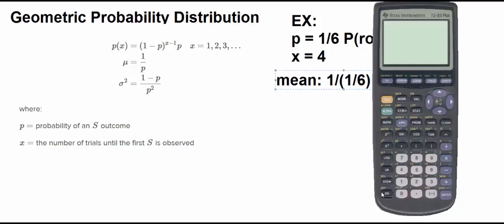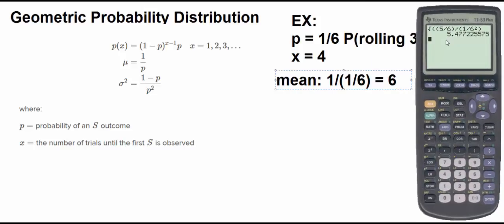Your standard deviation here, you're going to take the square root. You're going to take the square root of 1 minus p, or you could also think of this as your q, which would be 5/6 divided by 1/6 squared. So you have a standard deviation here of about 5.477, which is kind of large. So within one standard deviation you're going to get an interval of roughly 1 to 11. So you're expecting to get that 4 between your first and 11th trial.